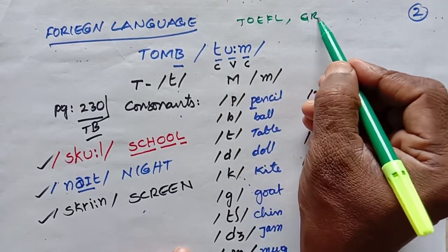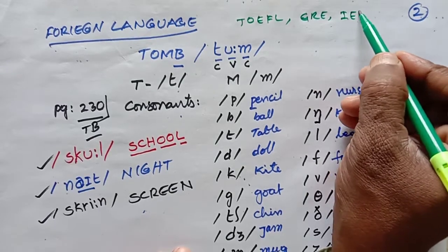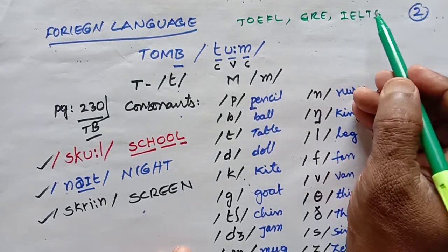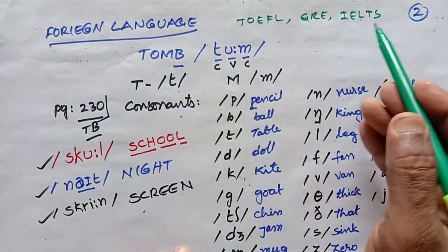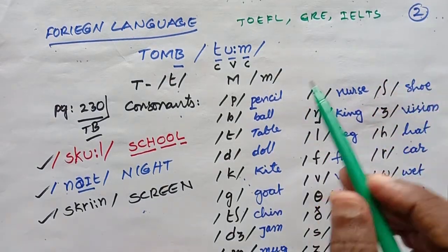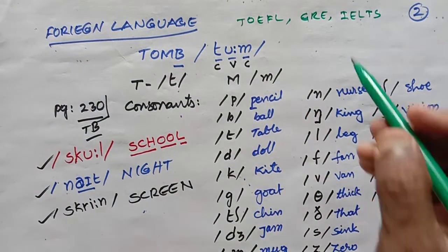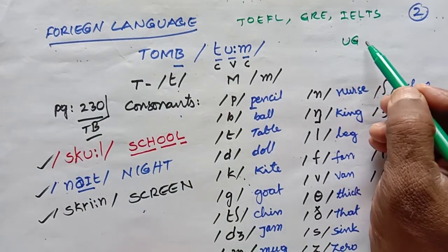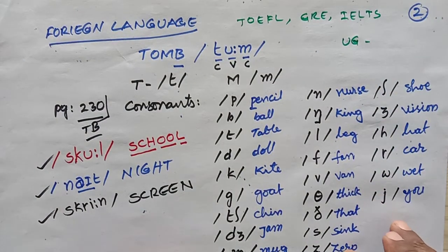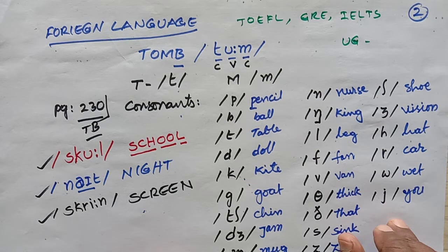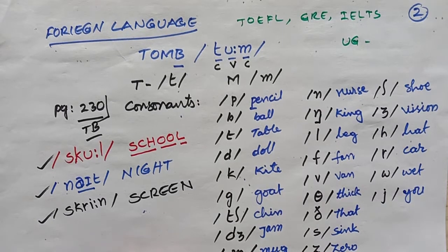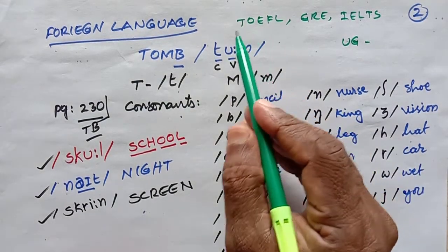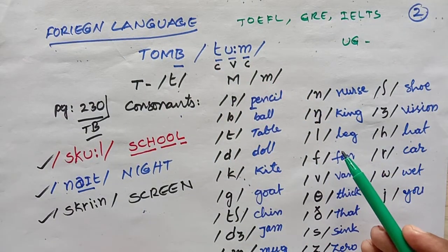Word-for-word translation may not be possible, hence we need to learn English well. To learn English we have to understand that with 5 vowels and 21 consonants — 26 letters — we have 44 different sounds. You can find this entire information on pages 227 to 233 of your textbook. Time is limited but we need to give it a quick reading.